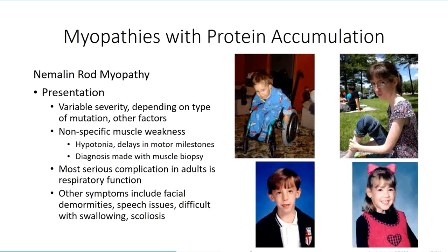The presentation pattern will be highly dependent on the specific mutations causing the condition. Generally speaking, patients will present with some degree of muscle weakness. In more severe cases, presentation may occur very early on with hypotonia, or floppy baby syndrome, and delays in reaching motor milestones, and an inability to ambulate without assistive devices. In milder cases, symptoms may be very subtle and go undiagnosed until later in life. Patients may also present with characteristic facial deformities due to facial muscle involvement, speech impairments due to bulbar muscle involvement, and skeletal deformities such as scoliosis due to postural muscle involvement.